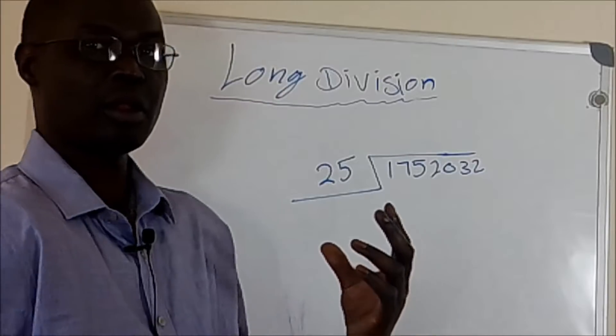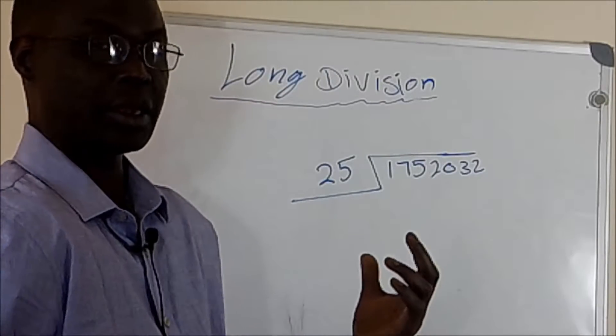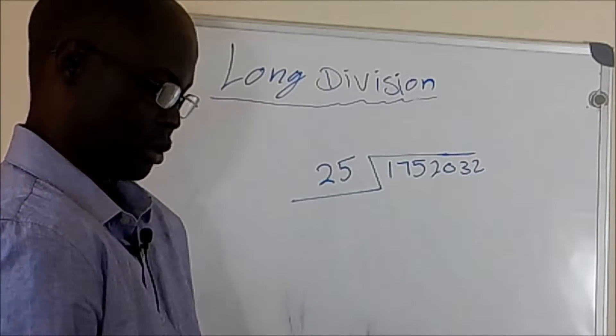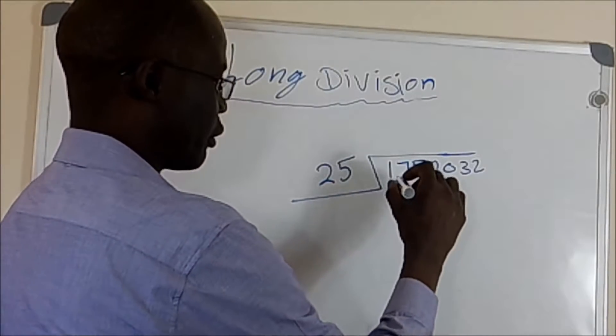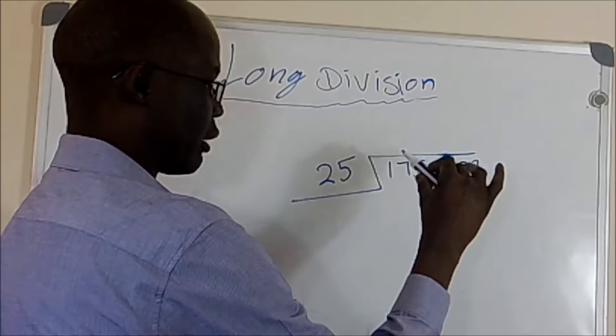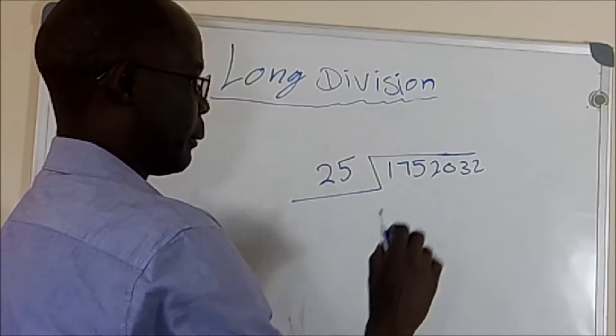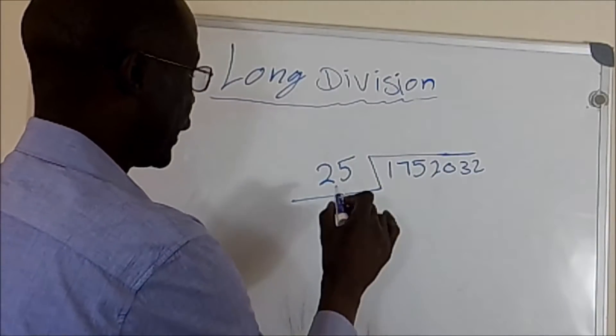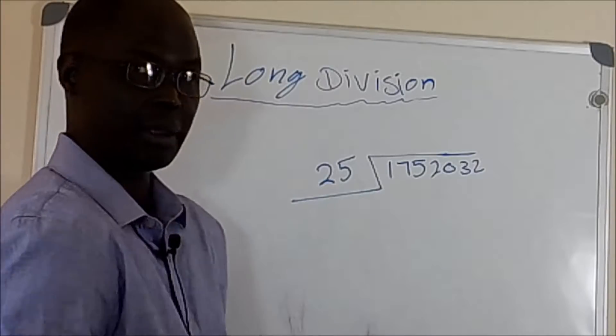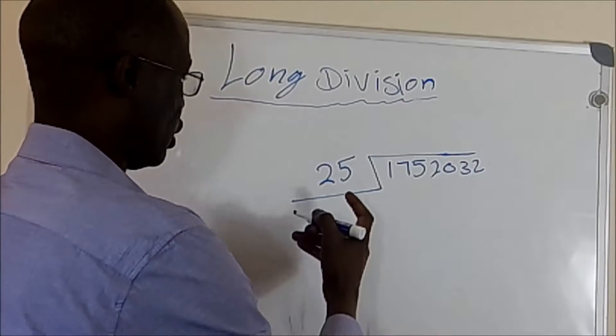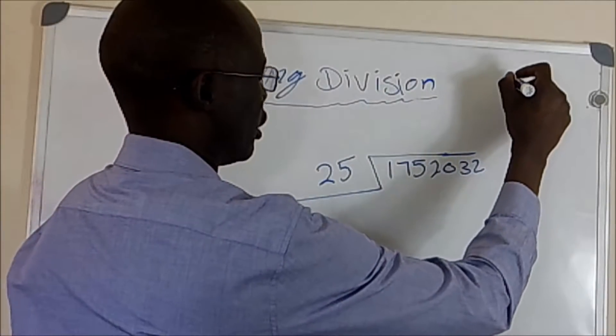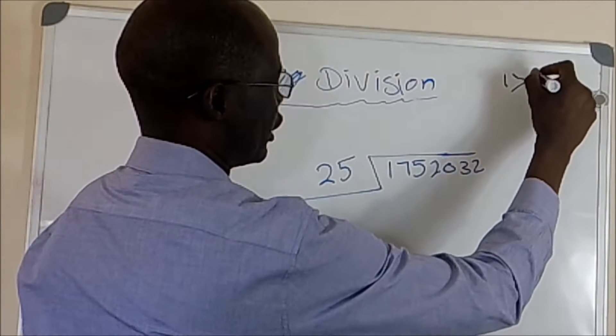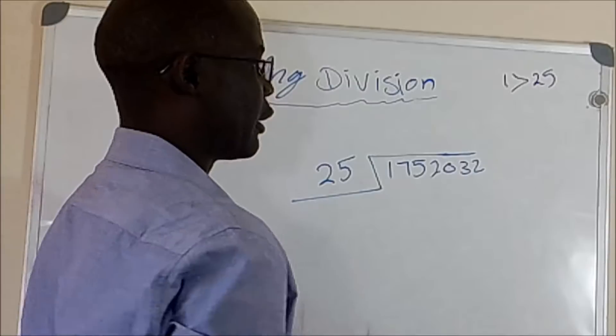And sometimes people ask, how can it go to zero? So, what we have here is 1, 7, 5, 2, 0, and we will begin with number 1. See if we can divide 1 by 25. One is less than 25, so we cannot divide it. Since it's less, we put zero.